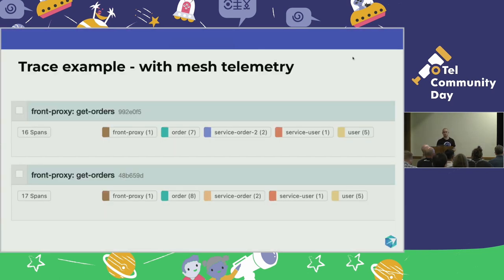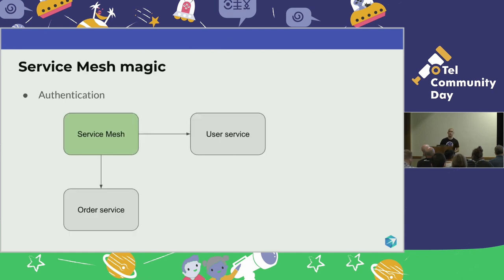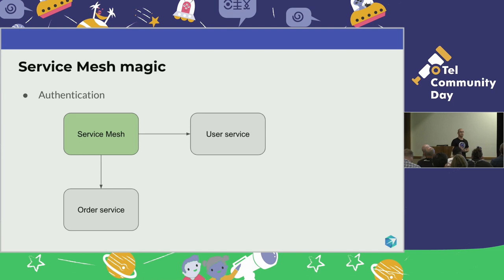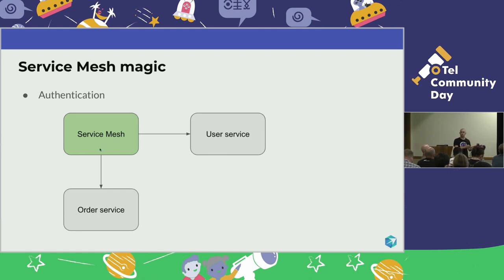Without the service mesh data it would be harder to understand the whole trace. Another interesting use case is authentication. With routing, one service communicates with another and the mesh makes a routing decision in the middle. But service meshes can be even more involved in the application when they're responsible for authentication — they actually become part of the application. When the client calls an API, the service mesh authenticates the user before the request reaches the other service.